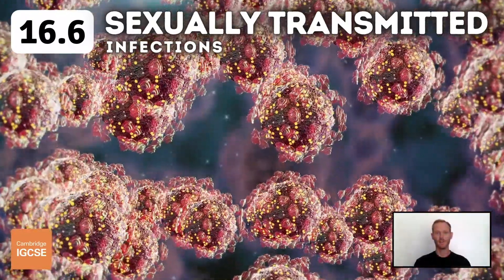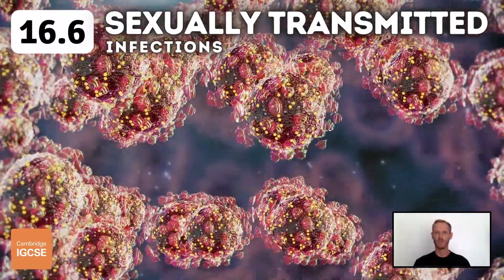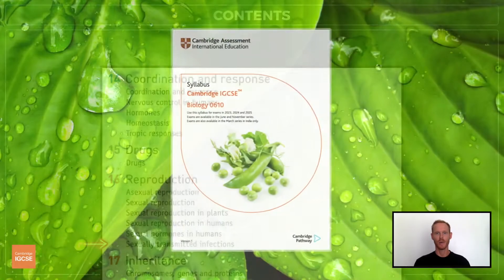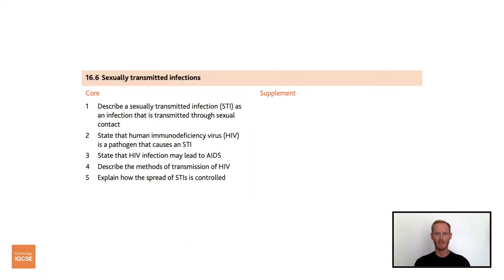Hello and welcome to another complete Cambridge IGCSE biology lesson, where you'll learn absolutely everything you need to know on topic 16.6, sexually transmitted infections. As always, we'll be following the Cambridge syllabus exactly, and we'll cover absolutely everything you need to know for your final exam.